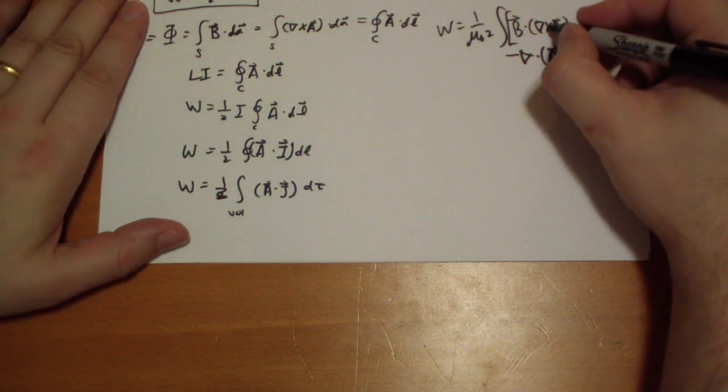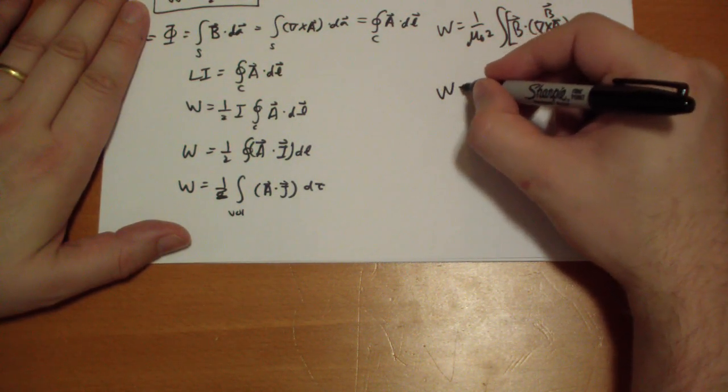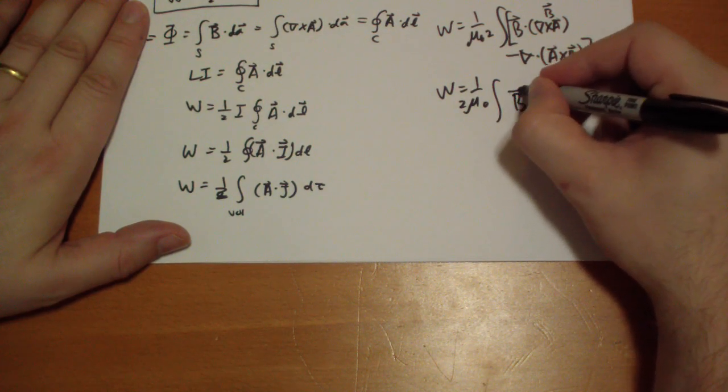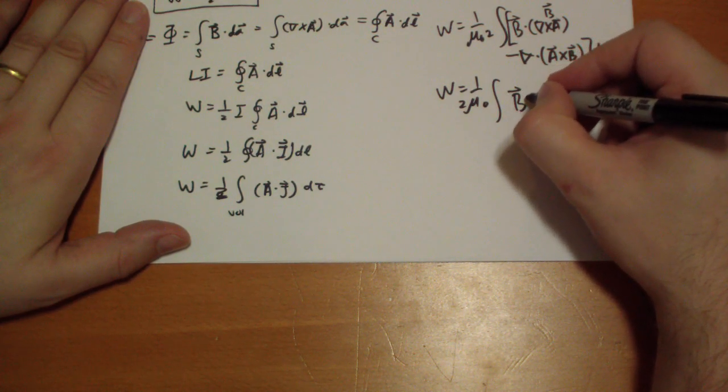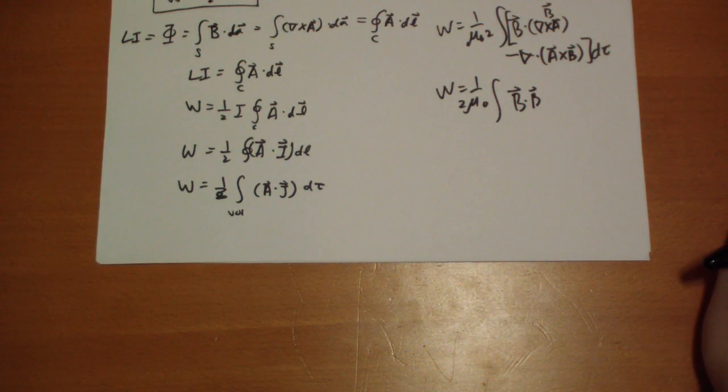This one should be rather apparent. What's the cross of A? That's B. So that's just B squared. Two mu naught, integral of B squared. Well, dot B vector, which is just B squared.